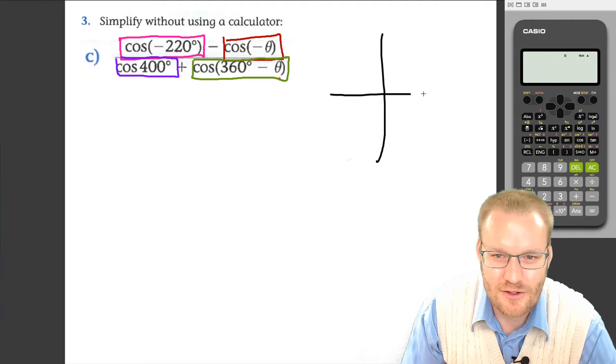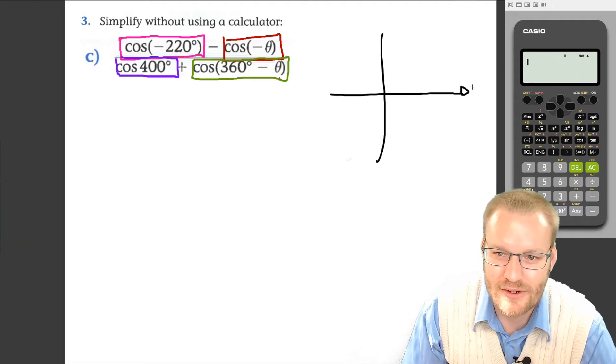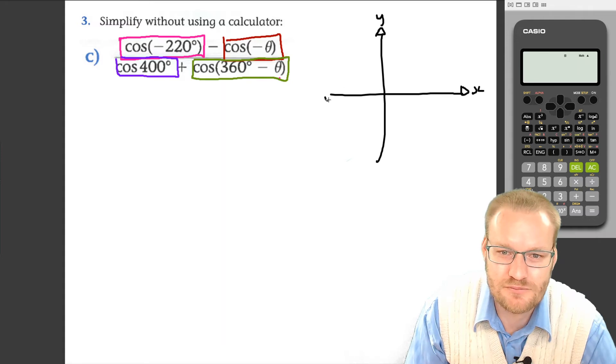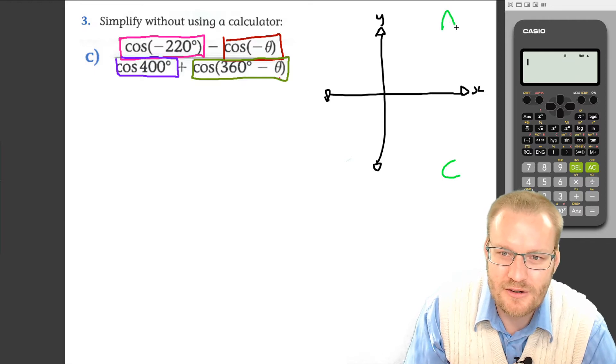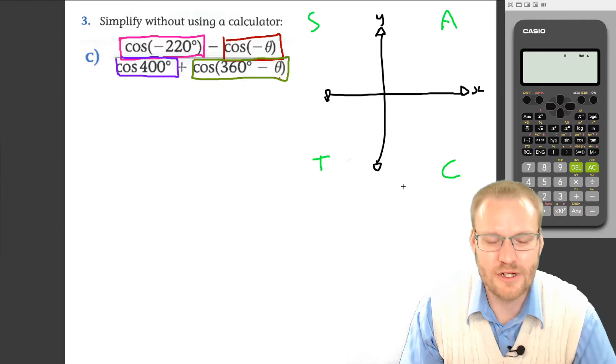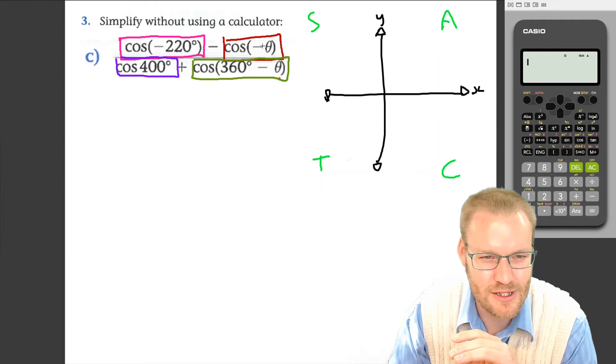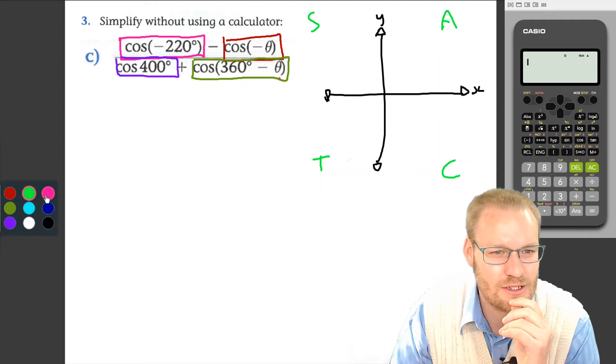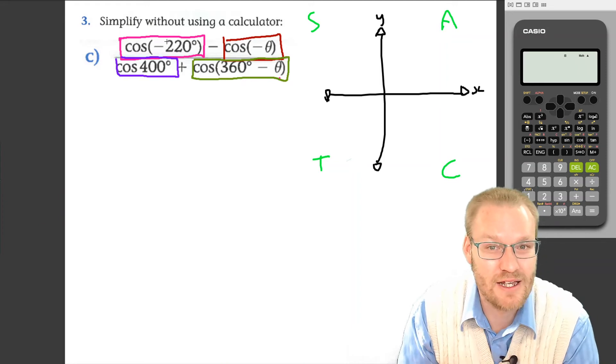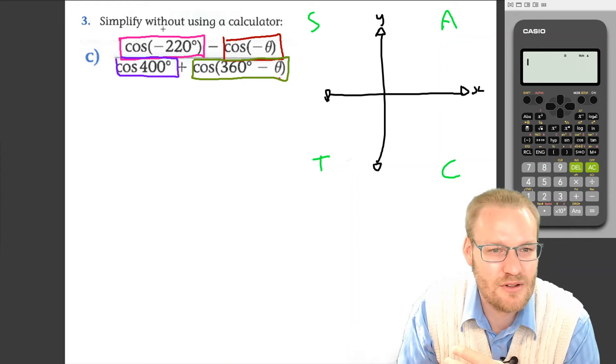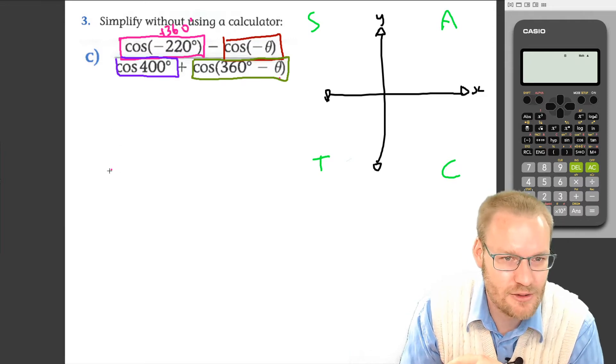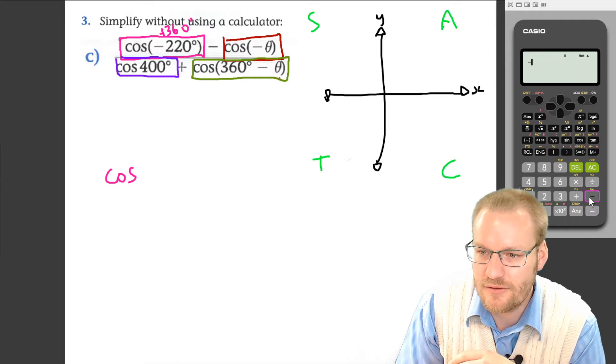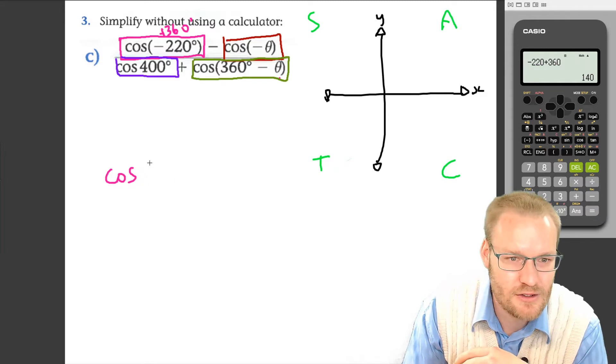We've got our CAST diagram at the ready, x and y. I'm going to do this one a bit more neatly and slowly because I suspect more are going to need help on this one. This particular part here in maroon: let's go through cos(-220°). Clearly a negative angle, so we're just going to add 360.